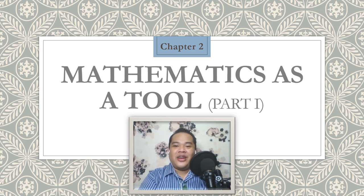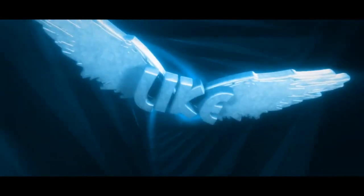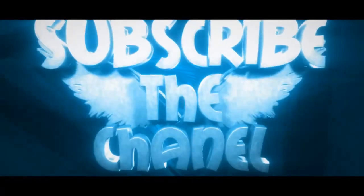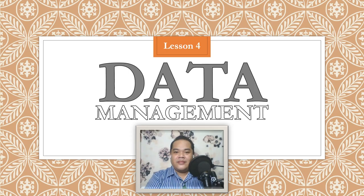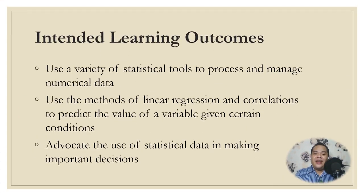Great day everyone, this is your instructor Sir Arvs. Come and join me as we enter Chapter 2 of Mathematics in the Modern World: Mathematics as a Tool, Part 1. Lesson 4 is Data Management. There are three intended learning outcomes for this lesson: first, use a variety of statistical tools to process and manage numerical data; second, use the methods of linear regression and correlation to predict the value of a variable given certain conditions; and third, advocate the use of statistical data in making important decisions.